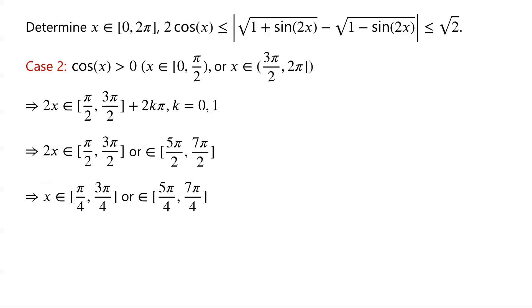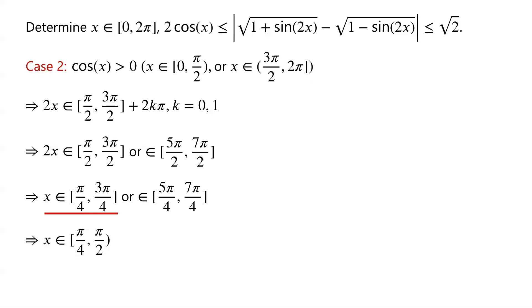The inequality cos(2x) ≤ 0 holds when x ∈ [π/4, 3π/4]. The condition cos(x) > 0 means x ∈ [0, π/2) or x ∈ (3π/2, 2π]. The intersection of [π/4, 3π/4] with [0, π/2) is [π/4, π/2). The interval [π/4, 3π/4] and (3π/2, 2π] have no intersection.